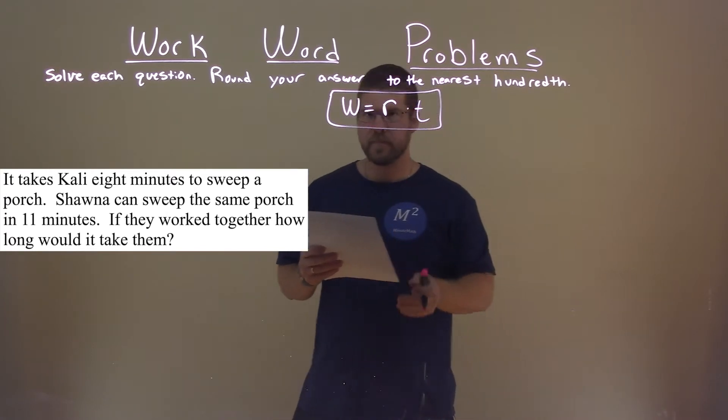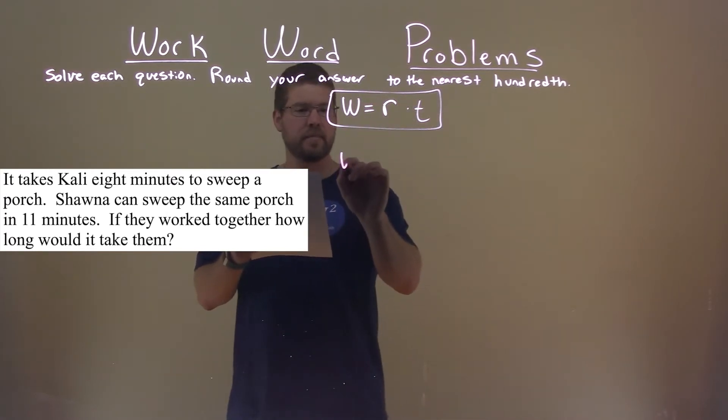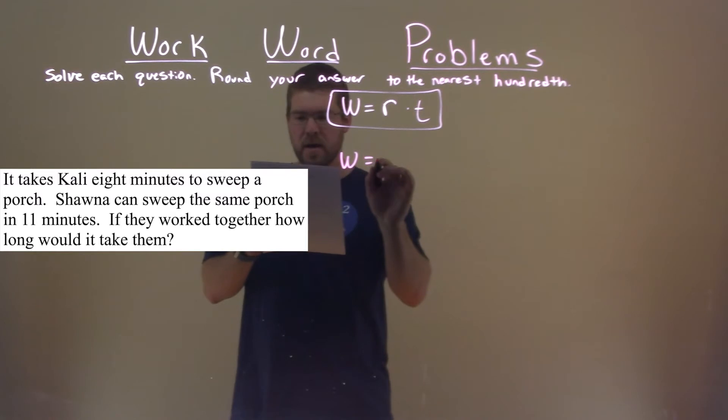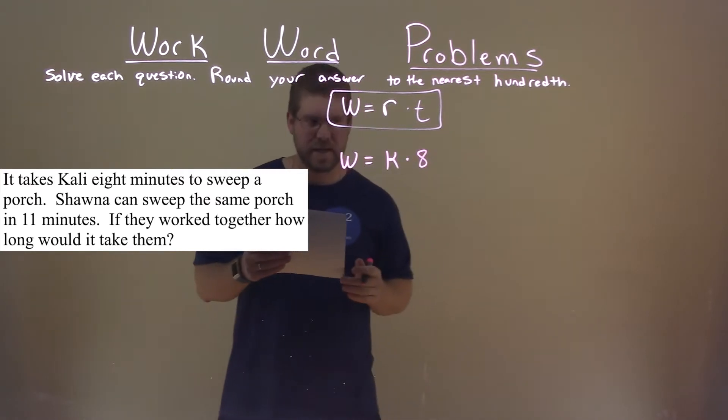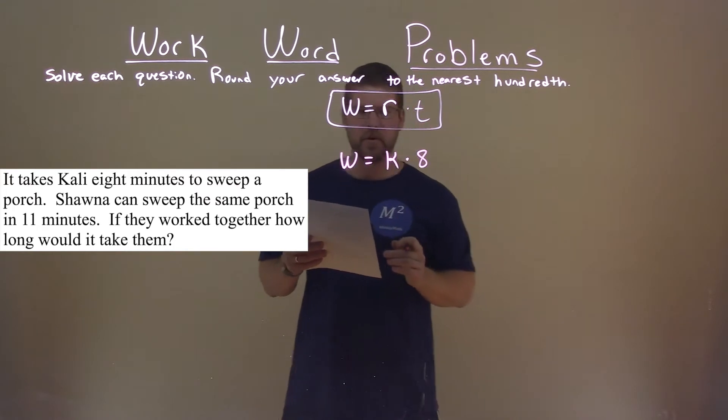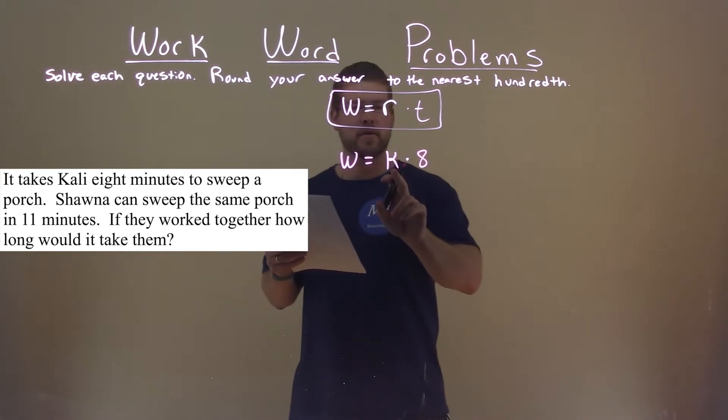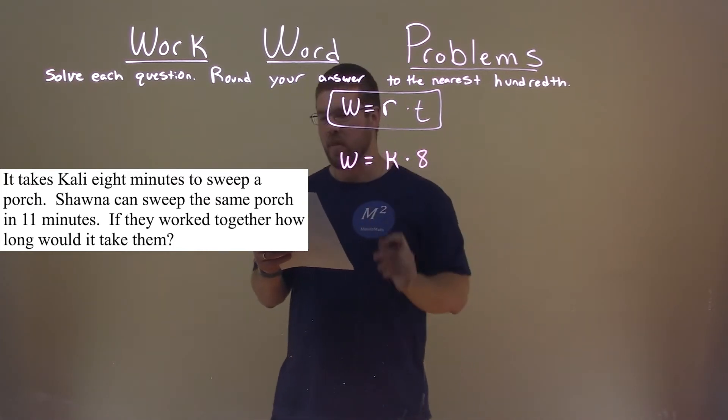So let's break down what we know. This work that Kali did of sweeping the porch, we don't know what her rate is, so we'll call that K for Kali. They told us here that it takes eight minutes. So Kali's rate times eight minutes gives us the work that was done.